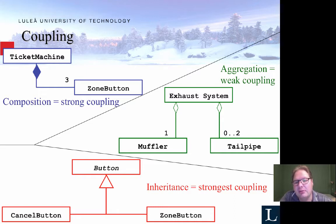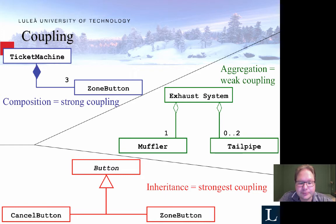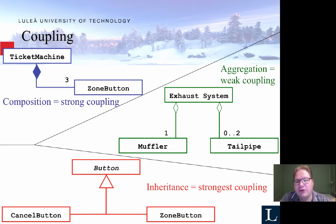Aggregation, on the other hand, means objects exist on their own. Basically the exhaust system knows of a muffler and a tailpipe — they might be arguments to the constructor — but the muffler and tailpipe can exist on their own, even if there isn't an exhaust system. Inheritance is the strongest coupling: cancel buttons and zone buttons are buttons, so they inherit all the features of button unless they override some of it. So we should strive to use aggregation, but composition over inheritance.